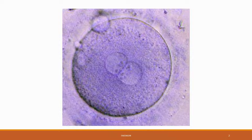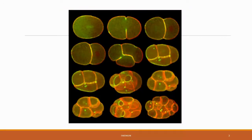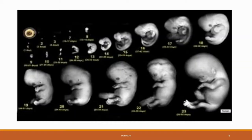This process perfectly obeys cell theory, which states that all cells currently on earth originated from prior cells. That cell splits into two cells, then four, and so on and so on, until a human body takes shape and forms.